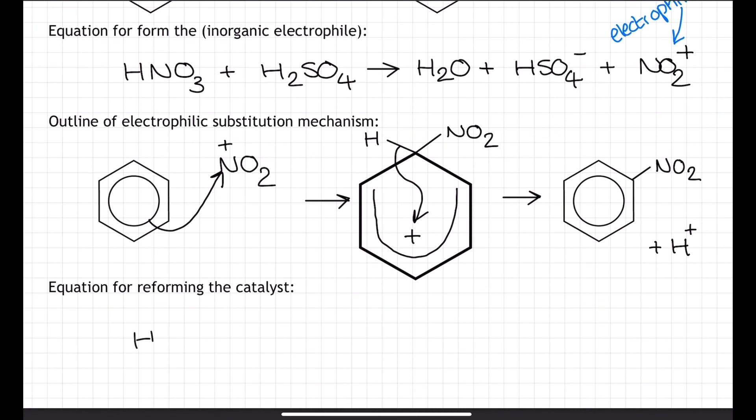In our final stage, we're going to demonstrate the regeneration or reforming our catalyst, the H2SO4 from before. Here we demonstrate what I actually described in the second stage of the mechanism. The HSO4 minus is going to react with the H plus ion, and it's going to regenerate that H2SO4 catalyst in the equation.